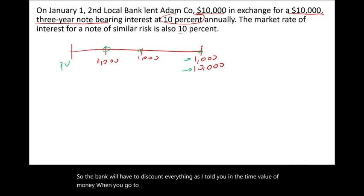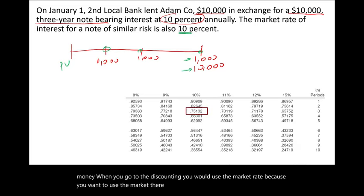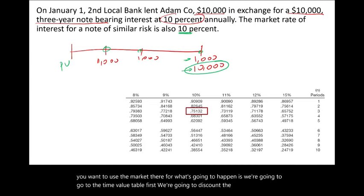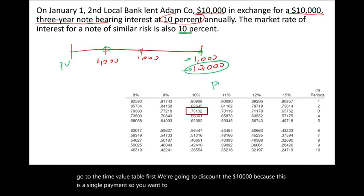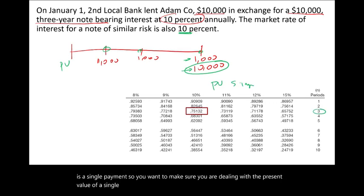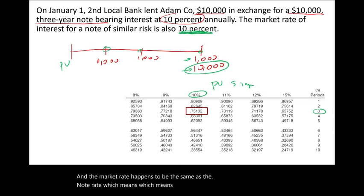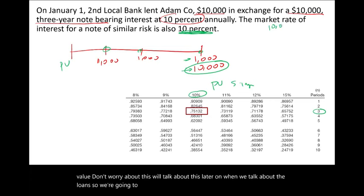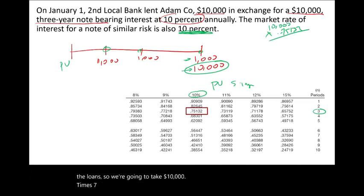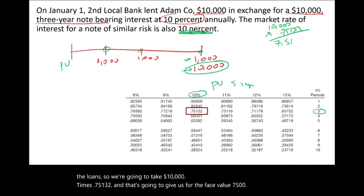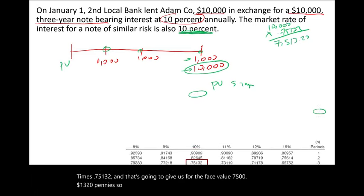When discounting, we use the market rate. First, we discount the $10,000 single payment: N equals 3, I equals 10%, factor is 0.75132, giving us $7,513.20. Then we discount the annuity — three payments of $1,000 per year, using the present value of an ordinary annuity table.